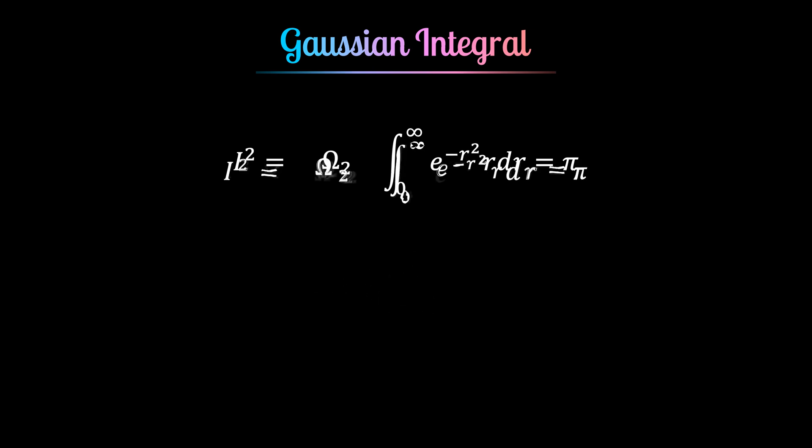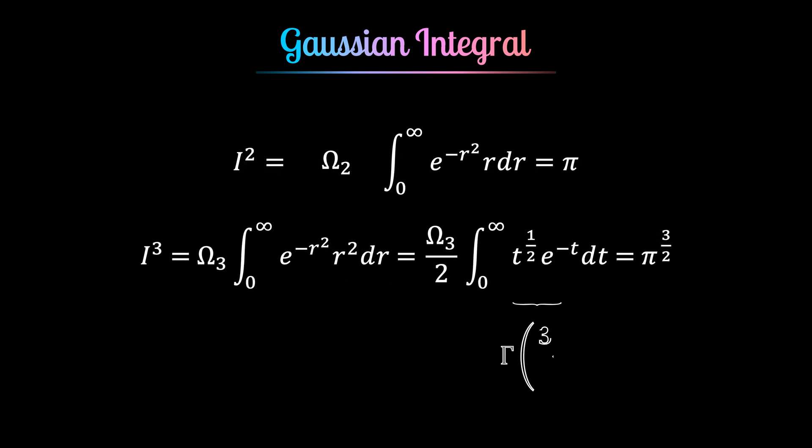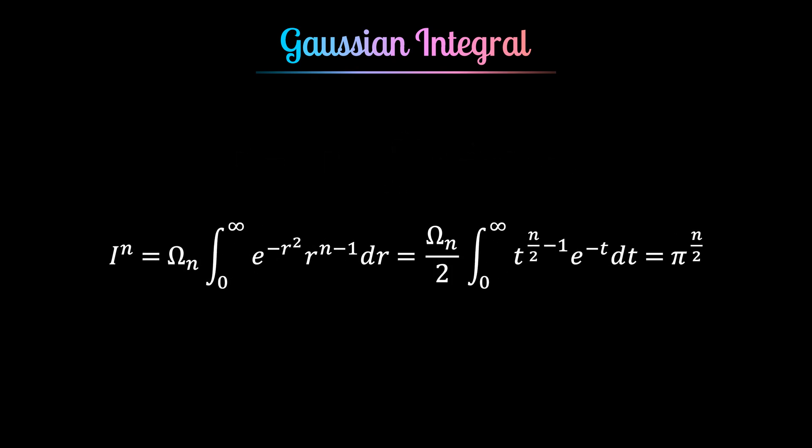And in the same way we can find the expression of ω₃. For this we just have to evaluate the value of I to the power 3. This substitution redefines the integral in terms of a function that generalizes the factorial to continuous values, and this allows us to extend the concept of volume to an n-dimensional sphere. In general, the value of ωₙ can be extracted by evaluating the value of I to the power n.